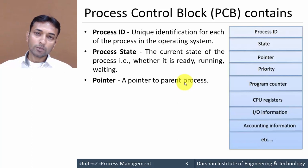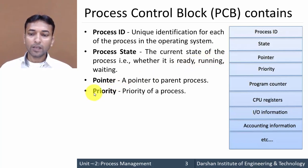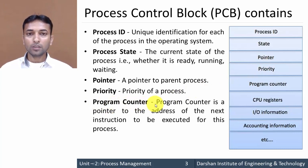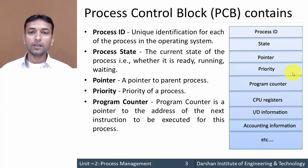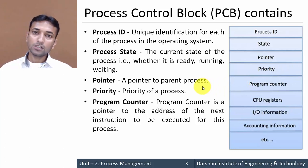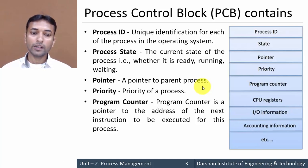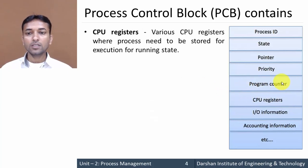The third field is a Pointer — a pointer to the parent process. If a process is created by another process, this pointer points to its parent process. The fourth field is Priority, which contains the priority of the current process. The fifth field is Program Counter, which is a pointer to the address of the next instruction to be executed for this process.